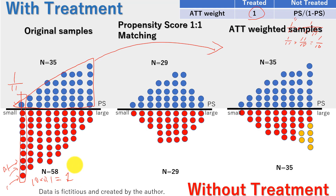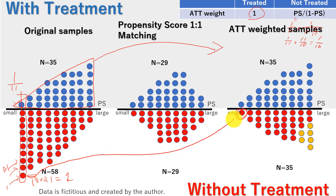That means 10 times 0.1 — so these 10 observations shrink to just one observation. The 10 red dots become just one red dot. Then we do the same thing for the next column.